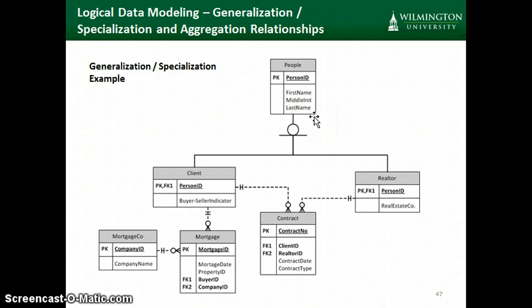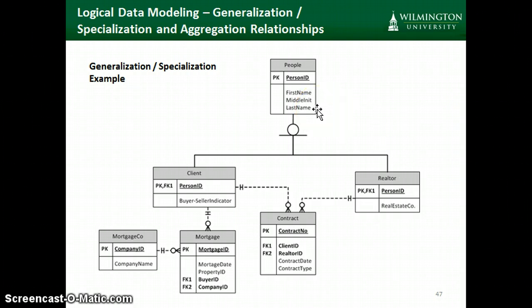If a person could be both a client — sometimes a buyer, sometimes a seller — and maybe the realtor sometimes buys and sells their own homes, by setting it up this way, we would only have to store the person's name once in the superentity table.